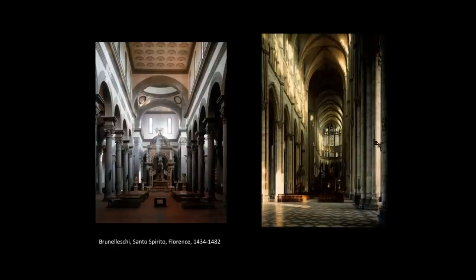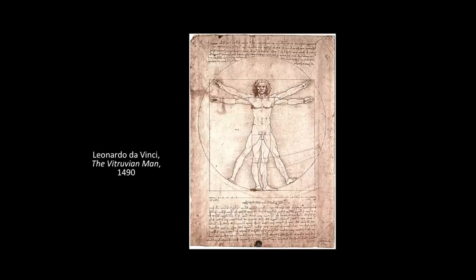I want you to notice in this building the way in which squares and circles really dominate the space. We talked about this with da Vinci's Vitruvian Man. Da Vinci is a little bit after Brunelleschi, but this image encapsulates ideas which Brunelleschi was dealing with when he built Santo Spirito. The image of man as the centerpiece of the universe — the idea that if we study man, it will get us nearer to God because man is God's chief creation — is at the centerpiece of what Leonardo is doing, using the square and circle as the fundamental elements of creation.